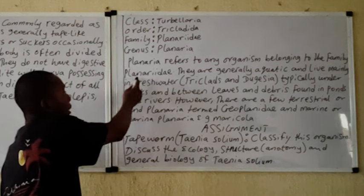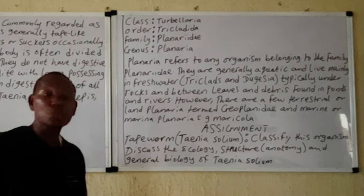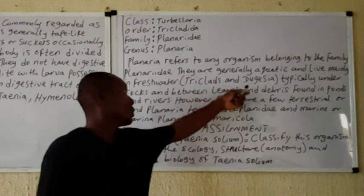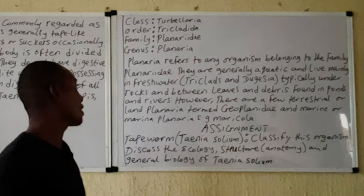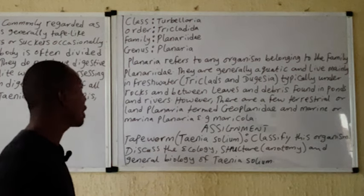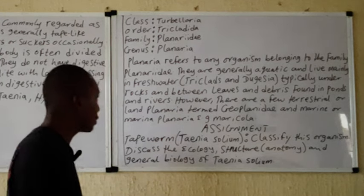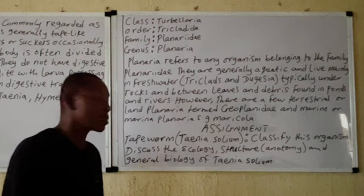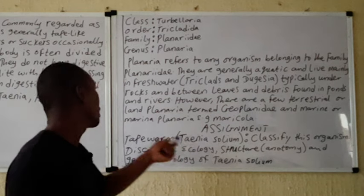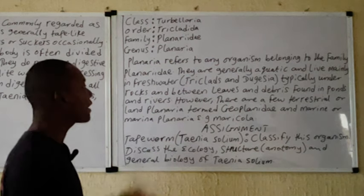We have the family Planariidae and the genus Planaria. Organisms generally regarded as planaria are found in the family Planariidae and they are generally free-living in fresh water. Some species — the Tricladida and the Dugesia — are typical planaria species that usually inhabit fresh water. They usually live under rocks or leaves, and in debris in ponds. However, there are some terrestrial species regarded as the Geoplanidae, and we also have marine species of planaria.